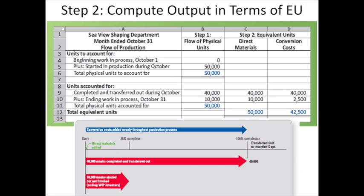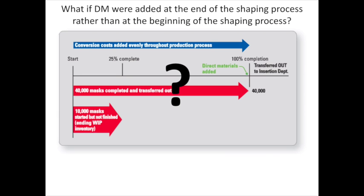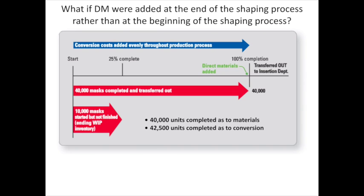Now, what if instead of direct materials being added at the beginning of the process, they were added at the end of the process? How would that change your computation? If direct materials are added at the end of the process, then we only have 40,000 equivalent units as to materials — because those 10,000 still in work in process haven't reached the point where direct materials are added, so none of them are complete as to materials. We still have 2,500 complete as to conversion, giving us 40,000 equivalent units for materials and 42,500 for conversion.